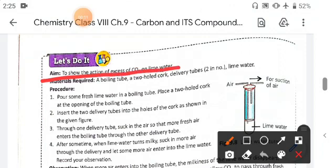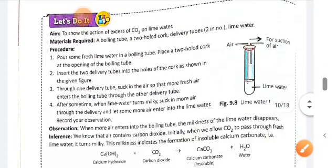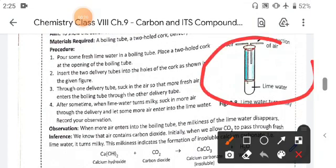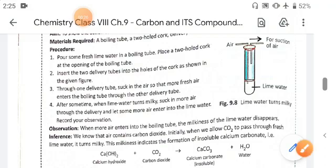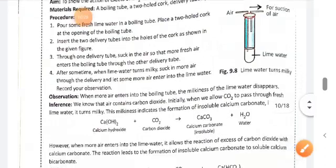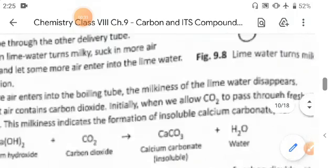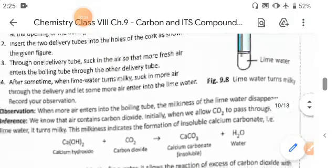We will show the action of excess CO2 on lime water. You know that here is a test tube in which there is lime water. When carbon dioxide passes through this lime water, it will convert it into milky form.